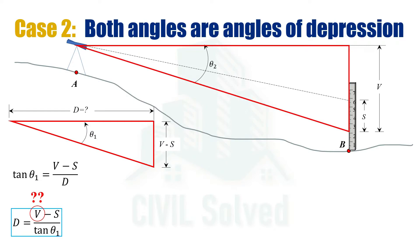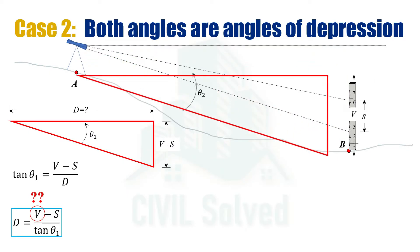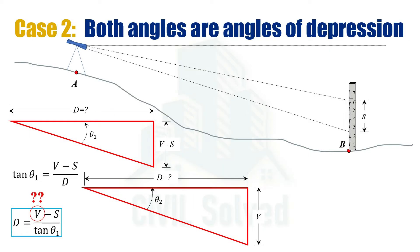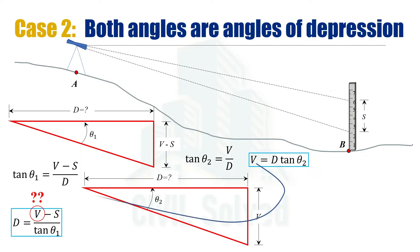In order to calculate the value of V, we consider another right angle triangle. In that right angle triangle the angle is theta 2, the perpendicular is V, and the base is D. Using tan theta again, tan theta 2 equals V over D. By cross-multiplying we get the value for V as D times tan theta 2.